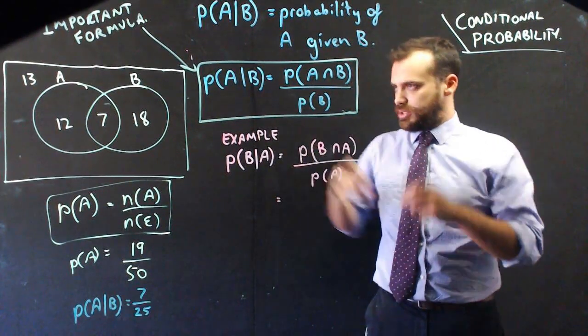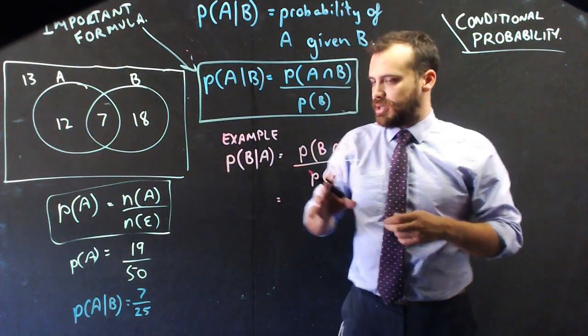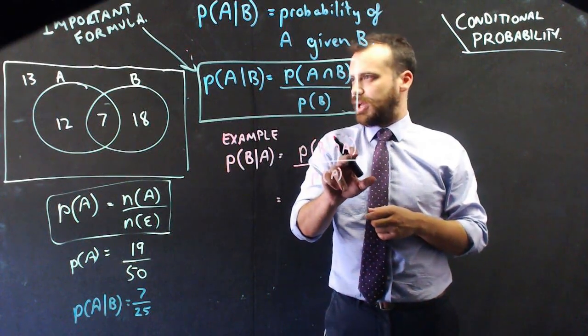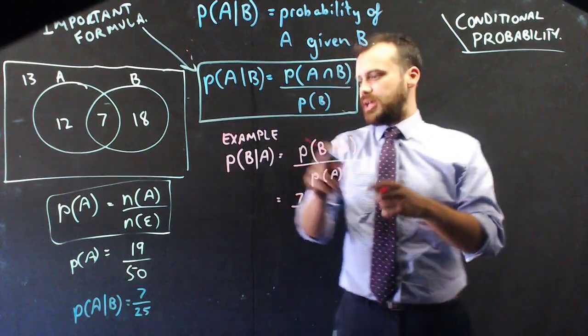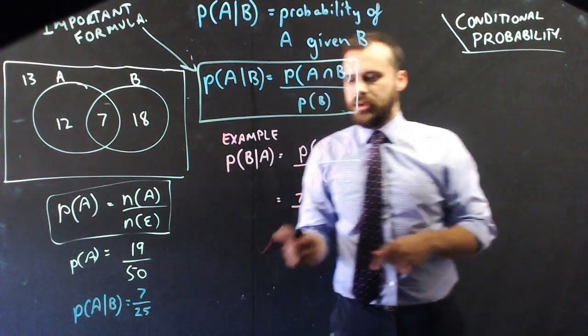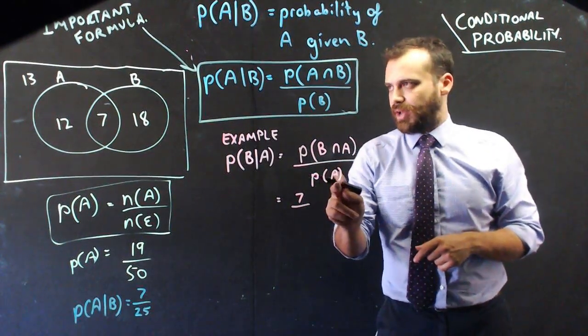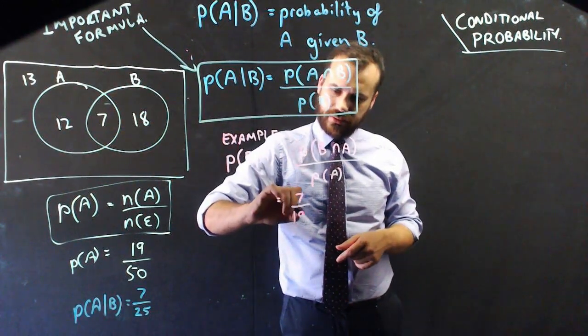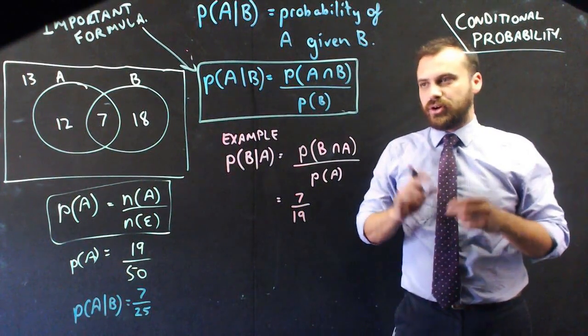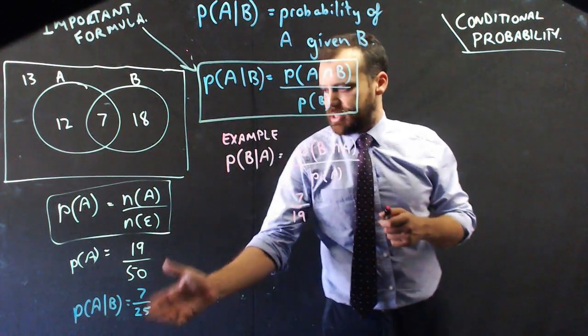So in this case, B given A is 7, which is the same as this one here. But the probability of A, if we look at A, is 19. So it's 7 in 19, whereas the previous answer was 7 in 25.